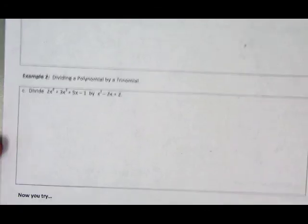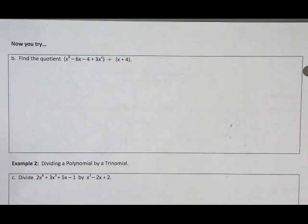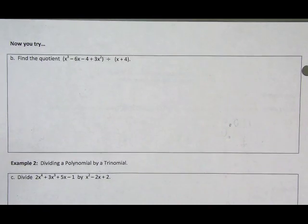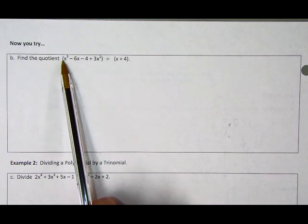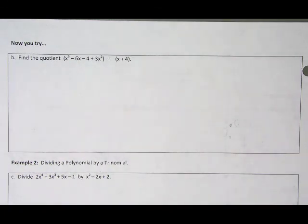All right. So why don't you take a couple minutes and see if you can get through the Now You Try letter B. And then in the next video, I'll come through and we'll set this up and do this one together. A little bit of a hint is you're going to want to make sure that you put your leading polynomial in standard form first.